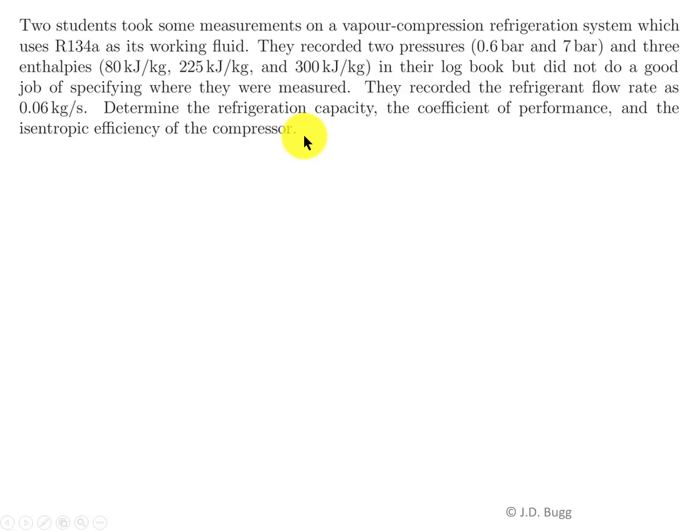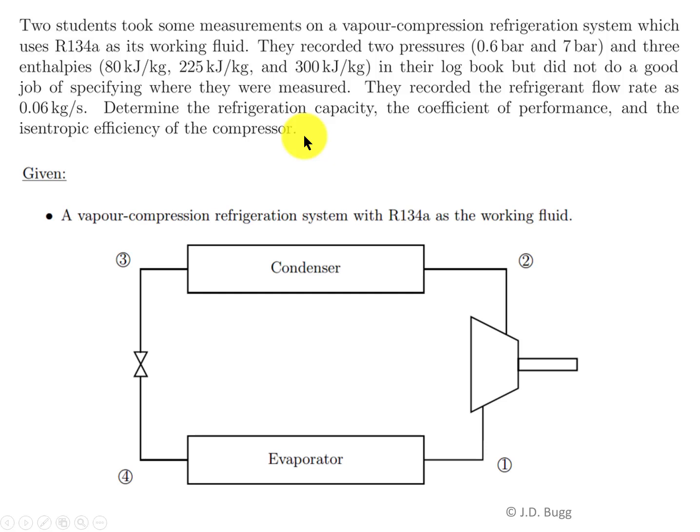For this question, we need to understand what a vapor compression refrigeration system looks like. So the four basic components: a compressor, a condenser, throttling valve, and an evaporator. The problem is two pressures were measured, 7 bar and 0.6 bar, but we don't know which of these four state points those pertain to. Also, three enthalpies were measured, and again we don't know where they were recorded. The mass flow rate is 0.06 kilograms per second, so that we do know.